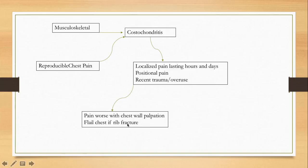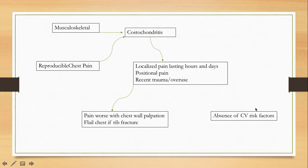On exam, pain is worse with chest wall palpation. If the patient has had severe trauma and fractured a rib, they may have flail chest — an entirely different situation where the patient is extremely short of breath and you must intervene immediately. In regular costochondritis, there is simple trauma and reproducible chest pain.